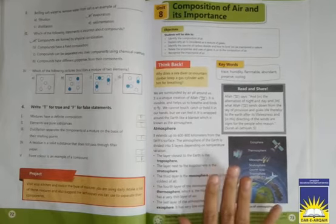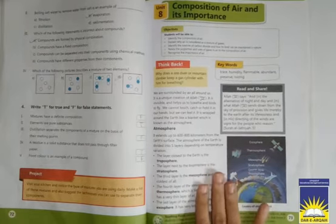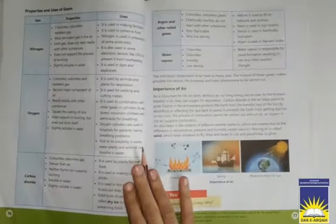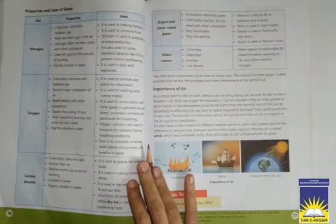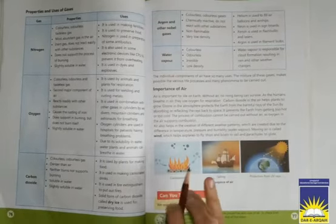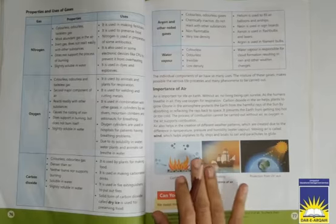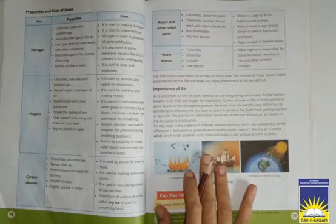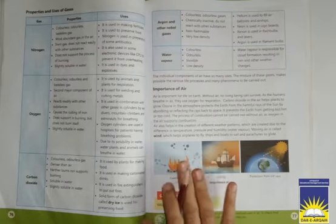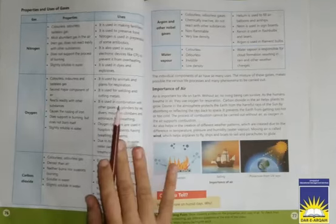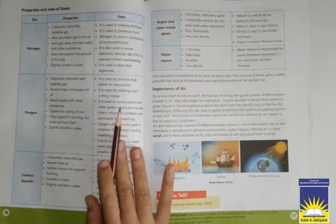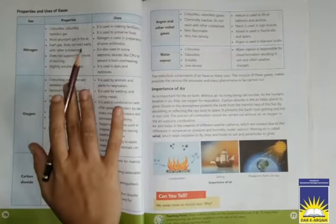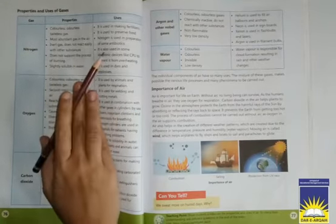Bismillahirrahmanirrahim, assalamu alaikum class students. I hope you all are fine. Open your science book page number 76. First we recite a dua then we will start our chapter. Rabbi zidni ilma. Now we are going to continue our chapter: composition of air and its importance. First we will discuss about properties and uses of gases.